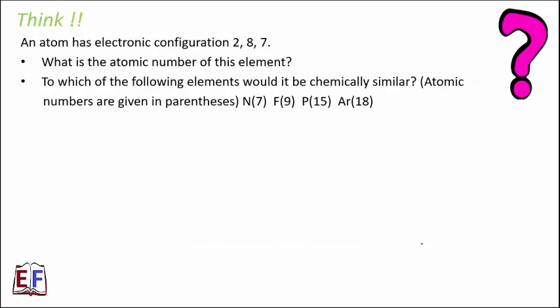An atom has electronic configuration 2, 8, 7. What is the atomic number of this element, and to which of the following elements would it be chemically similar: nitrogen (7), fluorine (9), phosphorus (15), or argon (18)? I'm sure you would have answered the question — I'm waiting for your response in the comment section. See you all very soon with a new video on a new topic. Bye bye!